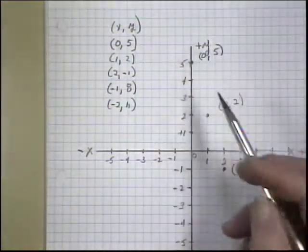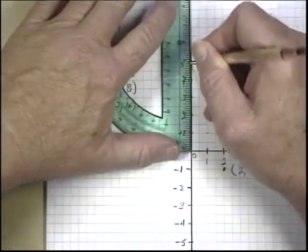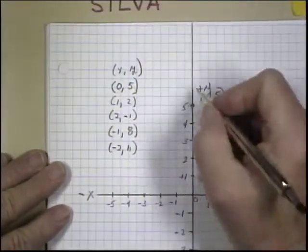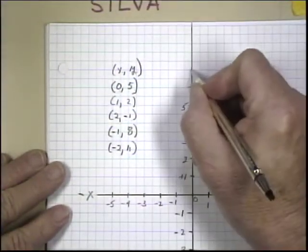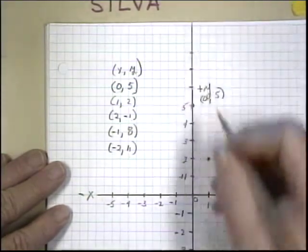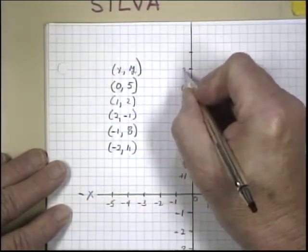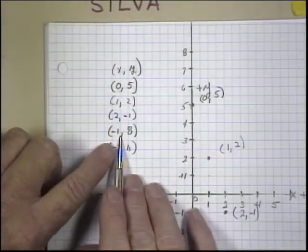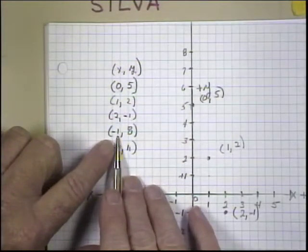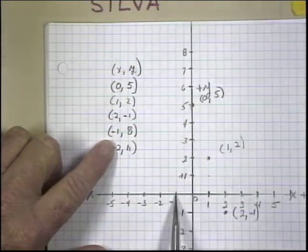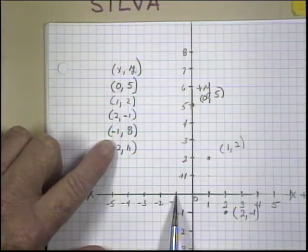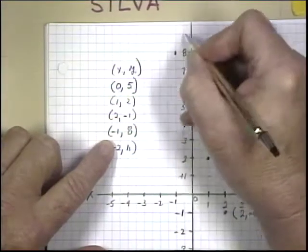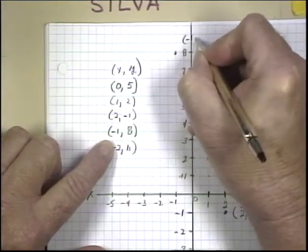Our next one is x equals a -1, which is here. And our y is 8. Well, we don't have enough units here. We're going to add some units to our graph. So this is going to be 6, 7, 8. So again, our x is a -1. Here's a -1 on the x-axis. And 8 on the y would be up here. So this is (-1, 8).